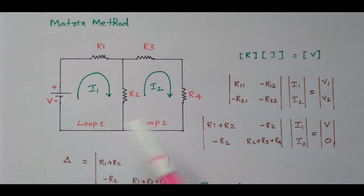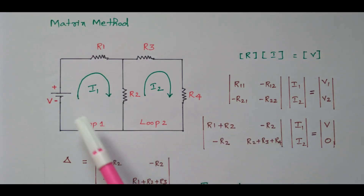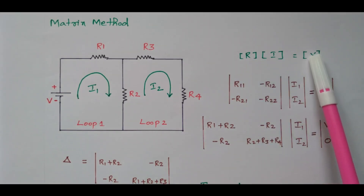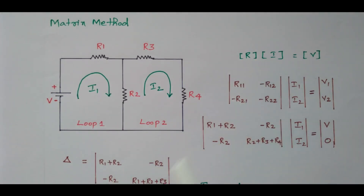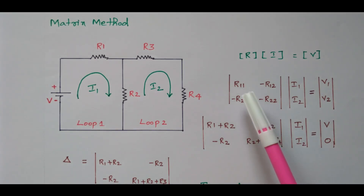In the matrix method we follow the procedure: V = I×R. The voltage matrix, current matrix, and resistor matrix are formed. For two loops, we have a 2×2 resistance matrix with elements R11, R12, R21, R22. The diagonal elements are positive; all off-diagonal elements are negative. For a three-loop network, it would be a 3×3 matrix.